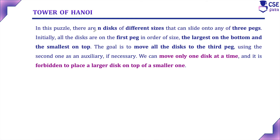In this puzzle, there are N disks of different sizes and there are three pegs. Initially, all the disks are placed on the first peg in order of size — that is, the largest disk will be at the bottom and the smallest one at the top.